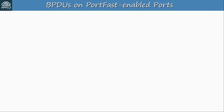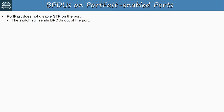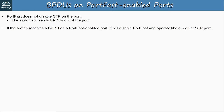Let's cover one more aspect of PortFast: how it handles BPDUs. A common misconception is that PortFast basically disables STP on the port, stopping it from sending BPDUs and also making it ignore BPDUs it receives. This is not true — PortFast does not disable STP on the port. The switch still sends BPDUs out of the port. And if the switch receives a BPDU on a PortFast-enabled port, it will disable PortFast and operate like a regular STP port. So if PortFast causes a loop, it should only be temporary — the switch should receive a BPDU from the other switch and then block the PortFast port if necessary.